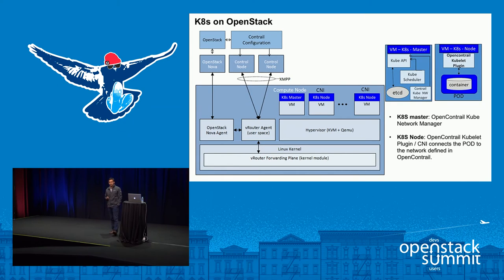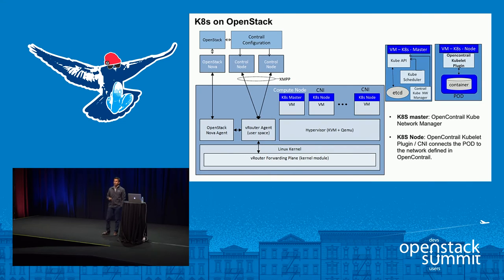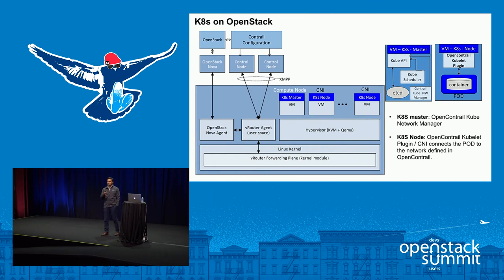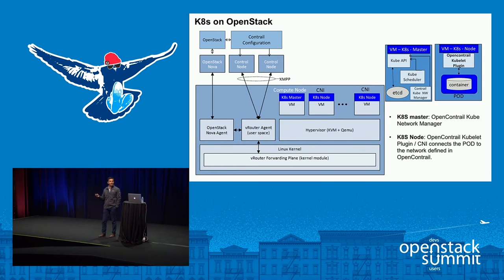To support Contrail in a Kubernetes environment, we have added a couple of things. There is something called the OpenContrail Kube Network Manager in the master, which listens to all API and scheduling messages from the Kubernetes API server. Based on that, we create all the Contrail resources required — a virtual machine, a virtual machine interface, and what network it should be plugged into. On the node, we have added our plugin. In the past with Kubernetes 1.1, we used a Kubelet plugin model, but now with Kubernetes 1.4 we are moving to the standards-based CNI plugin model, and the Contrail plugin will get launched whenever a pod gets scheduled on that node.